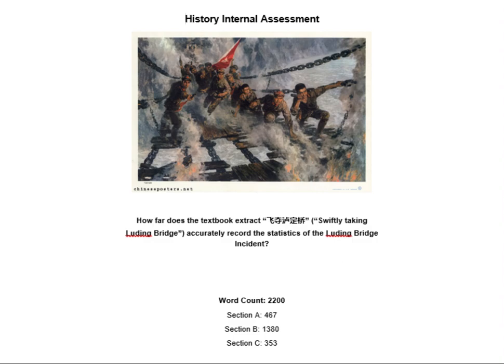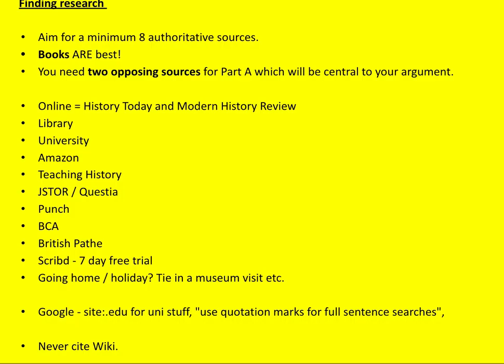You'll have a front page with the word count and your name clearly labelled on it. Once you've got your question, start finding research. I suggest you aim for a minimum of eight authoritative sources — so really good sources. Books are still best. And it's really crucial that for Part A you find two opposing sources which will be central to your overall argument.